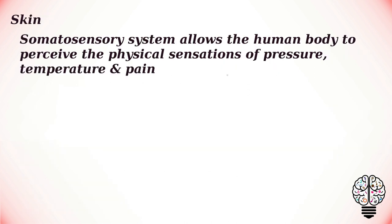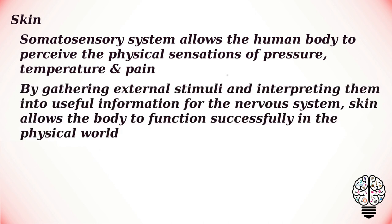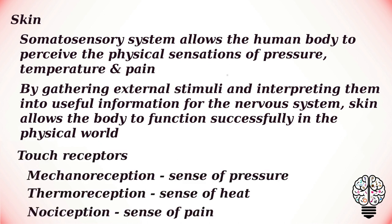The next is the somatosensory system, which allows the human body to perceive the physical sensations of pressure, temperature and pain. The human sense of touch is known as the somatic or somatosensory system. Touch is the first sense developed by the body, and the skin is the largest and most complex organ in the somatosensory system. By gathering external stimuli and interpreting them into useful information for the nervous system, skin allows the body to function successfully in the physical world. Touch receptors in the skin have three main subdivisions: mechanoreceptors, which is the sense of pressure; thermoreception, which is the sense of heat; and nociception, which is the sense of pain. Receptor cells in the muscles and joints called proprioceptors also aid in the somatosensory system, but they are sometimes separated into another sensory category called kinesthesia.